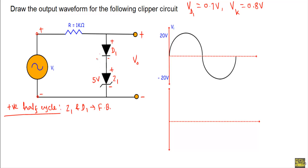If we want to get current flow in this direction during the positive half cycle, we have to keep both the diodes in forward bias. As a result, we have to apply a forward voltage of minimum 1.5V between this terminal to this terminal. So this 1.5V is the demarcation line.